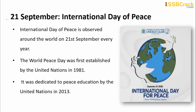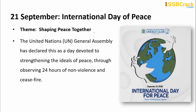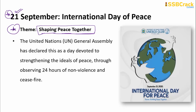21st September is celebrated as the International Day of Peace, also known as World Peace Day. It was first established by the United Nations in 1981 and dedicated to peace education by the UN in 2013. The theme for 2020 is 'Shaping Peace Together.' The UN General Assembly has declared it a day devoted to strengthening ideas of peace through observing 24 hours of non-violence and ceasefire.